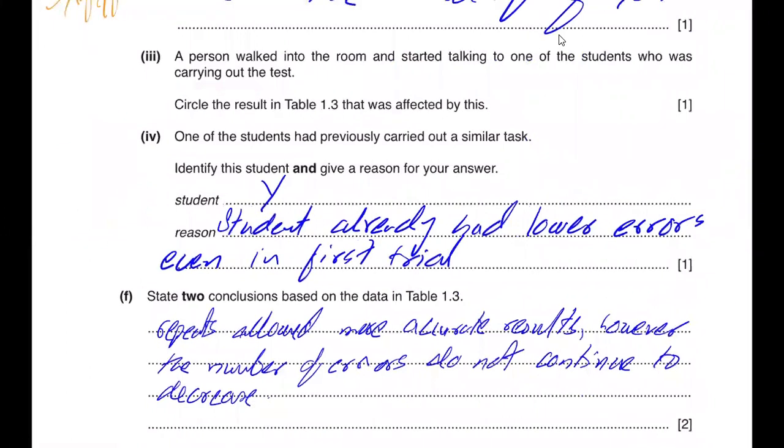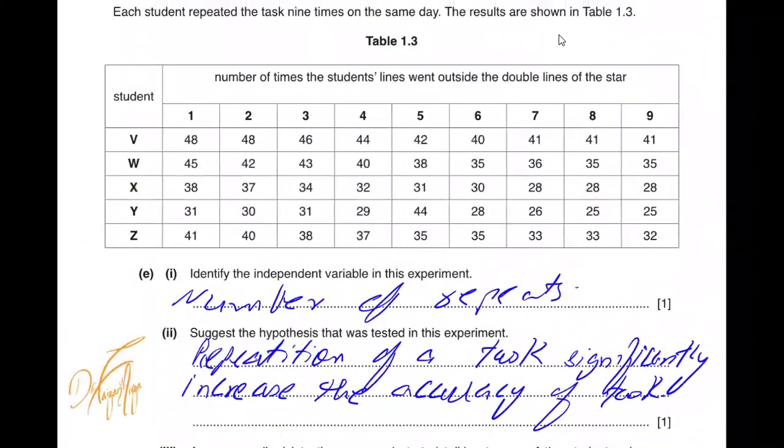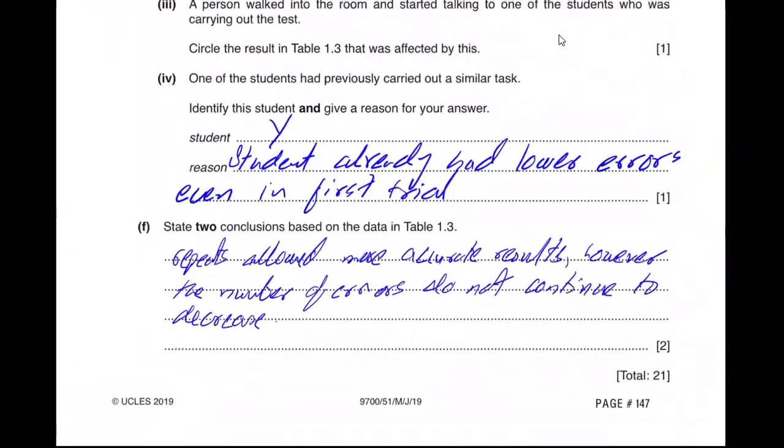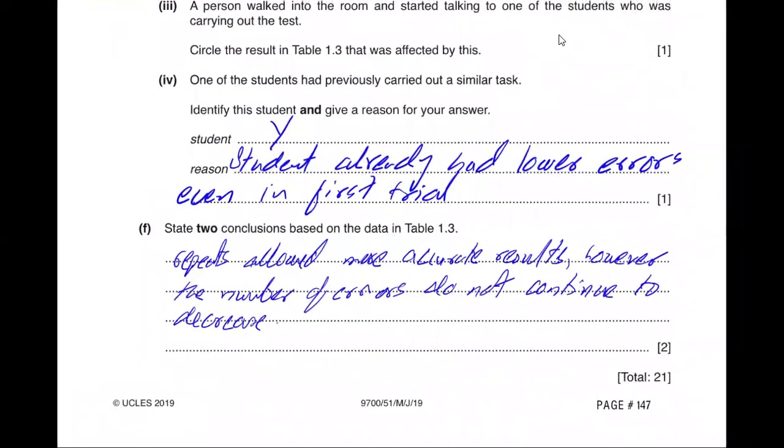Identify the independent variable here. The independent variable is the number of repeats. The cause is the number of repeats - the more the repeats the more accuracy the task gets. So the hypothesis that was tested in the experiment: the repetition of a task significantly increases the accuracy of the task. A person walked into the room and started talking to one of the students who was carrying out the task. Circle the value in table 1.3 that was affected by this. If you look at this you can see that the student y was performing pretty well, all the values are in the range of 30s and 29s and 31s and suddenly it becomes 44. This is too big a jump and then again the student comes back and performs better. So this value must be the one that you will circle because this student is the one who was affected by a person who interrupted the task.